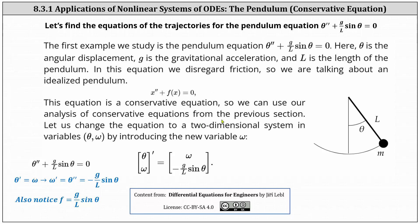The first step is to write the given equation as a two-dimensional non-linear system of differential equations using theta and omega. We let theta prime equal omega, and therefore omega prime equals theta double prime, which using the given equation is equal to negative g divided by l sine theta.